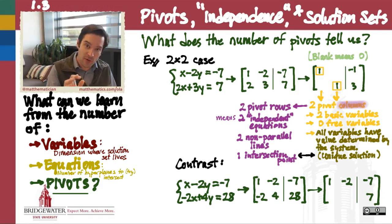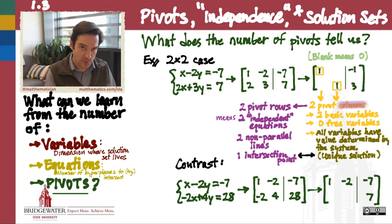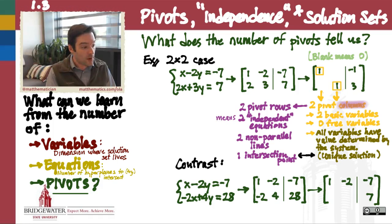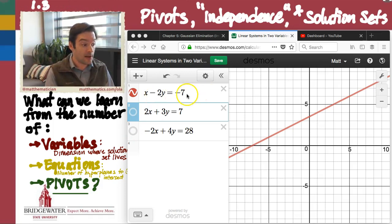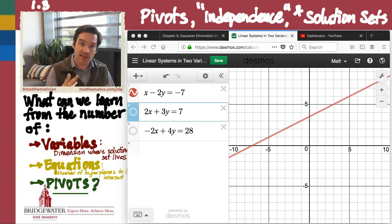So if that's what happens in the 2x2 case when I have two pivots, what happens if I don't have two pivots? Let's contrast the example we just looked at with an example where I have two equations and maybe fewer than two pivots. I'm going to begin this example starting with the same first equation that we had before, x minus 2y equals negative 7, this red line inside of the xy-plane.